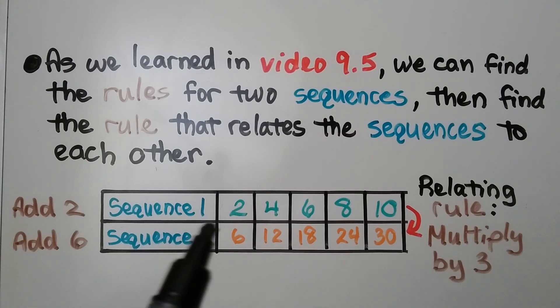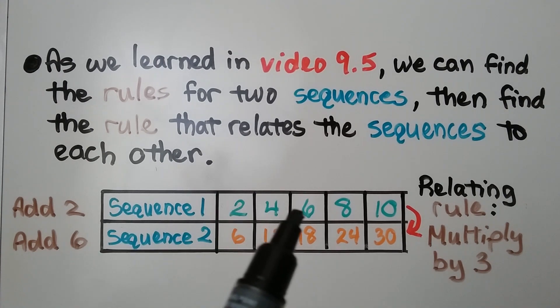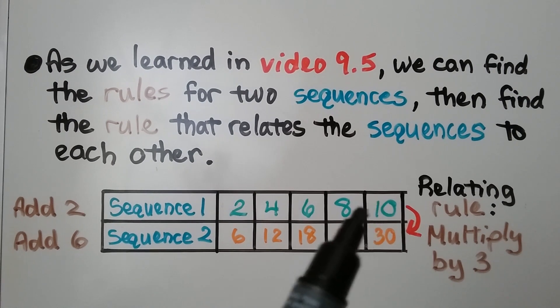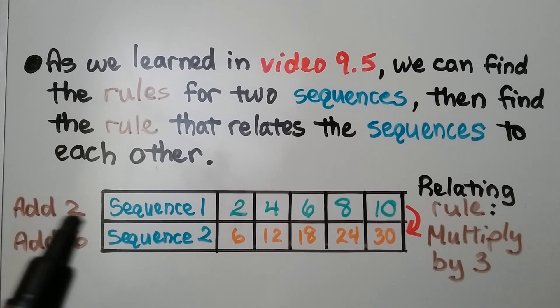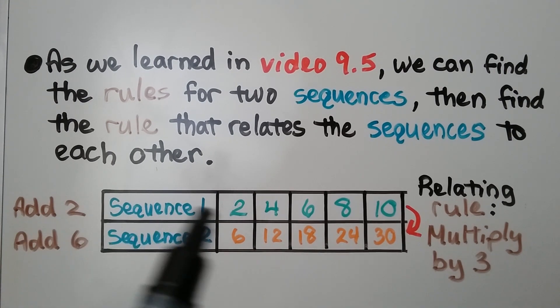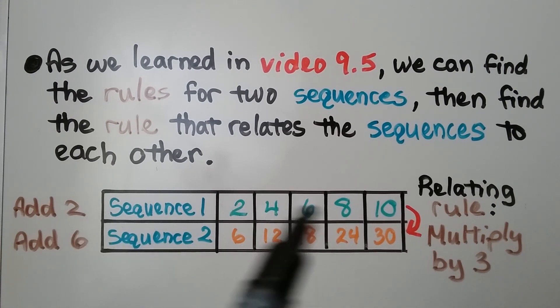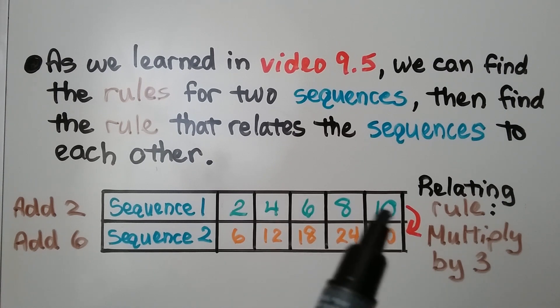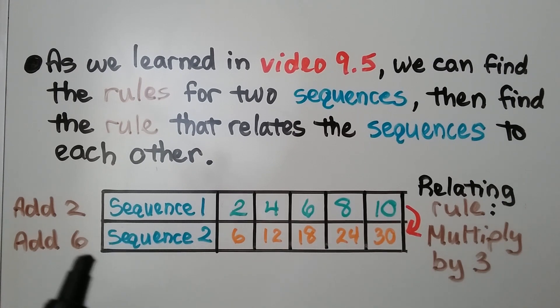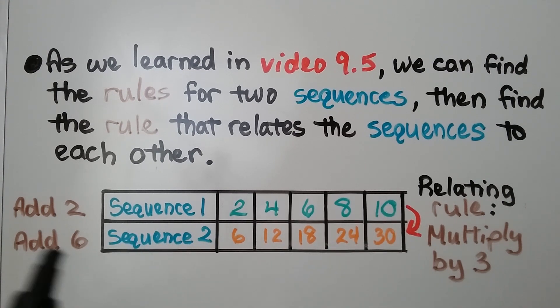We have this sequence going 2, 4, 6, 8, 10, so the rule for sequence 1 is to add 2 to get to the next number. For sequence 2, the rule is add 6.